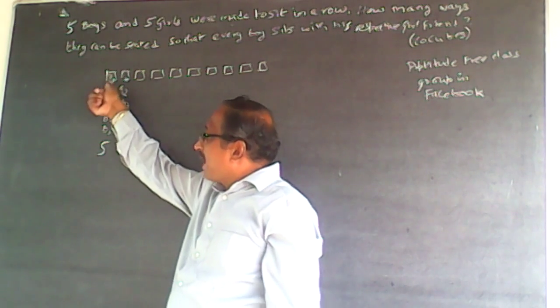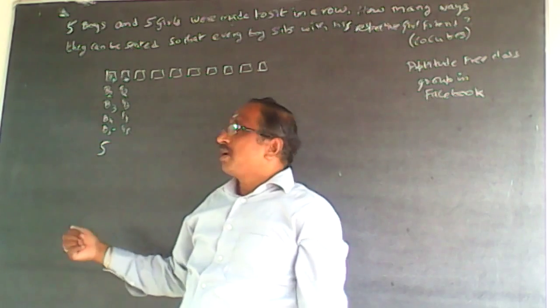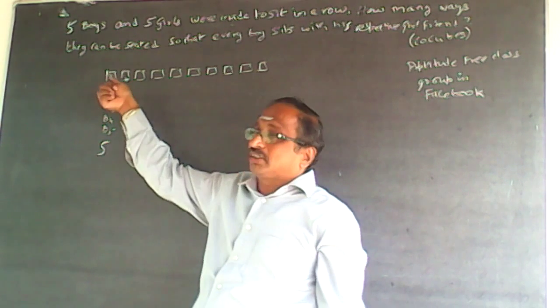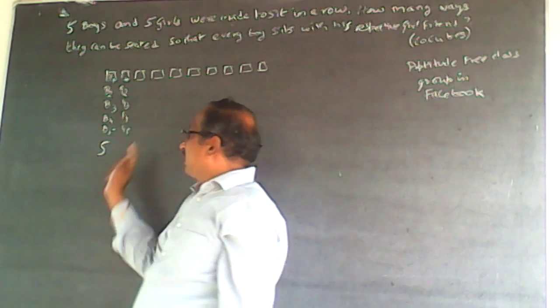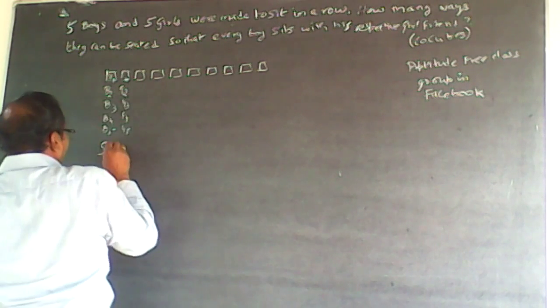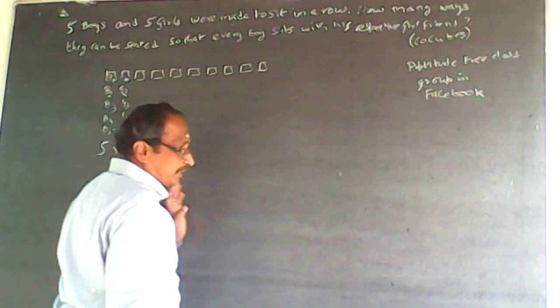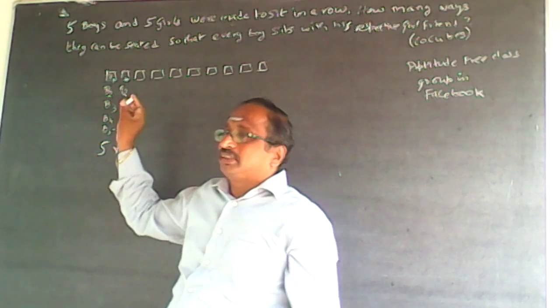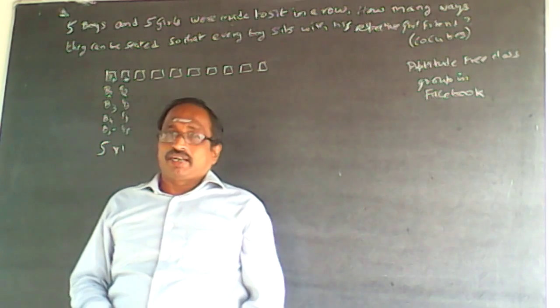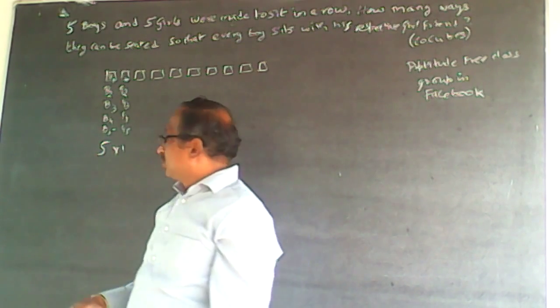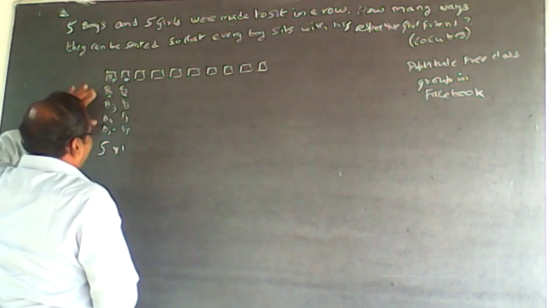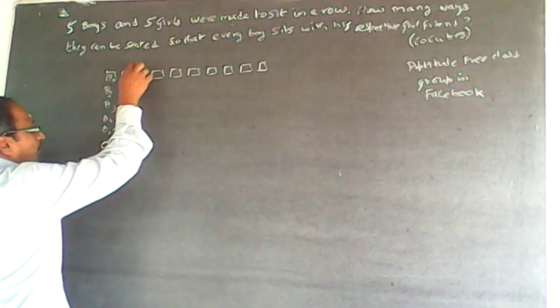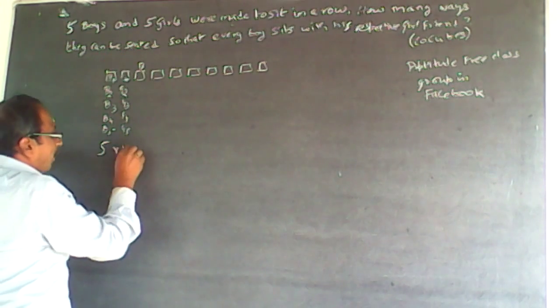Now because he has to have his girlfriend next to him, nobody has a choice here. So only his girlfriend has to be seated. So nothing can change here. Here the option can only be five into one, because he has got only one girlfriend. So it can only be one. Now what happens in the third box? In the third box, four boys are left. So one of the boys will be here, one of the four boys will be here.